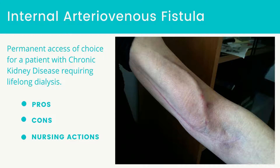Some cons are that the fistula cannot be used immediately after insertion, so planning ahead for an alternative access for dialysis such as a catheter is important. Needle insertions through the skin and tissues to the fistula are required, which causes anxiety for patients with a fear of needles. Infiltration of the needles during dialysis can cause hematomas, an aneurysm can form in the fistula, and heart failure can occur from increased blood flow in the venous system. The most important con to be aware of is arterial steal syndrome, where a large amount of blood is diverted to the vein, causing arterial perfusion in the hand to be compromised.